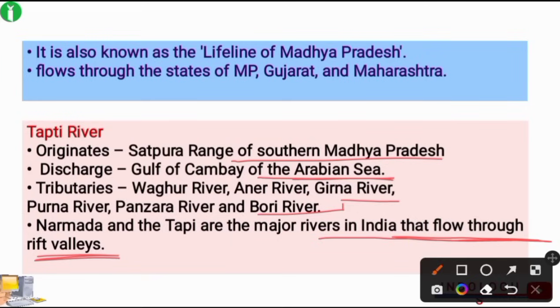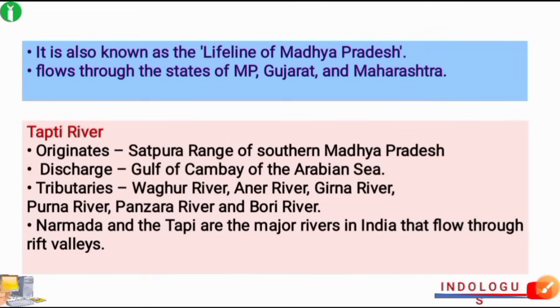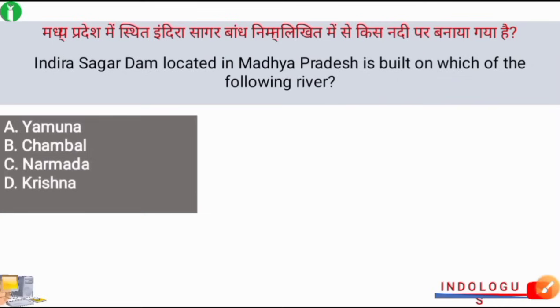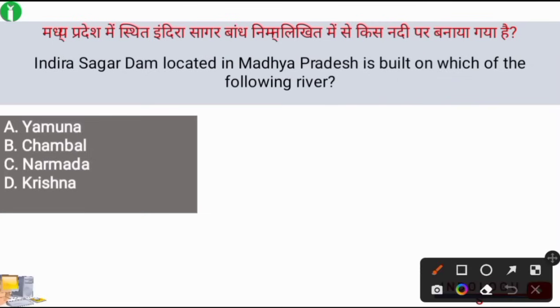Apart from these, the Damodar River is also important. It flows through the river valley and is also worth noting.